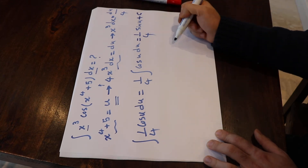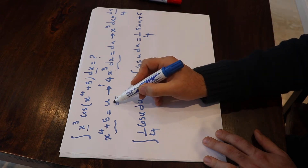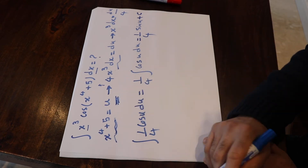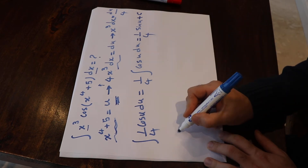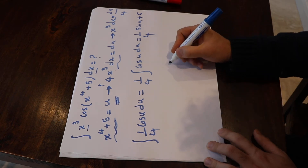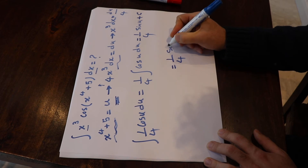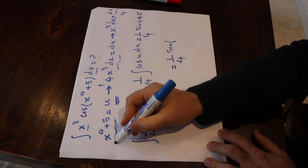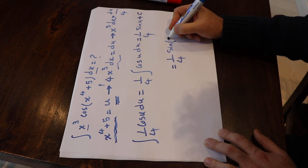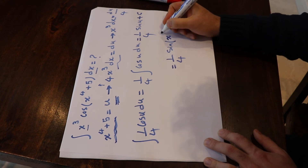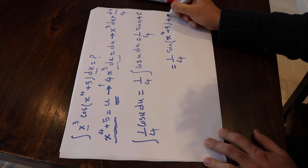Now at the end, you have to substitute u back with the function you defined at the very beginning. That means this integral will be equal to 1 divided by 4 times sine of x⁴ plus 5, plus C.